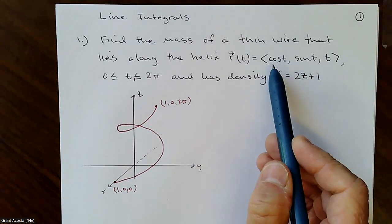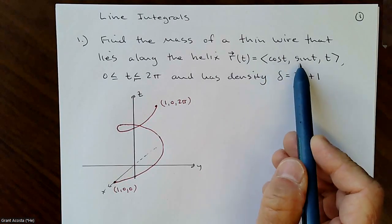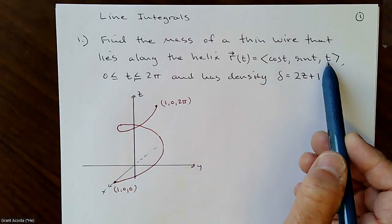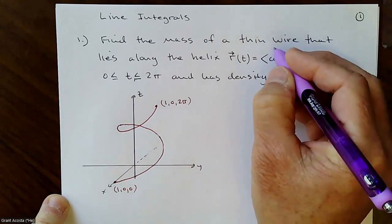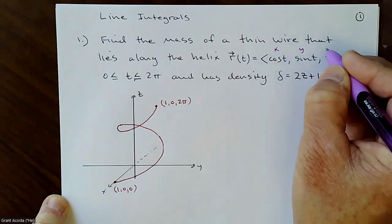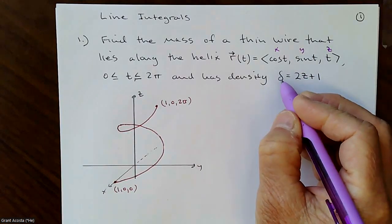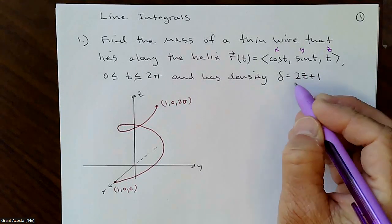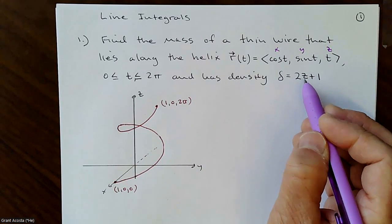We have a vector-valued function for this helix: cosine t, sine t — that's what makes it go around a circle — and then the z value is constantly increasing as time increases. This is x, this is y, that's z. For this particular wire, it's got a density associated with it that's 2z + 1, so the density of this wire gets bigger as z increases.